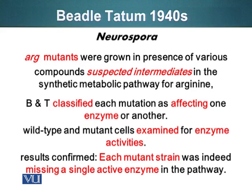Mutants that required arginine plus the minimal media to grow were called arg mutants, and they observed different versions of arg mutants. They realized that if arginine was the compound missing, they could test whether precursors to arginine could also recover these mutants. They classified each mutation as affecting one enzyme or another in the metabolic pathway for arginine production. Results confirmed that each mutant strain was indeed missing a single active enzyme in the arginine biosynthesis pathway.